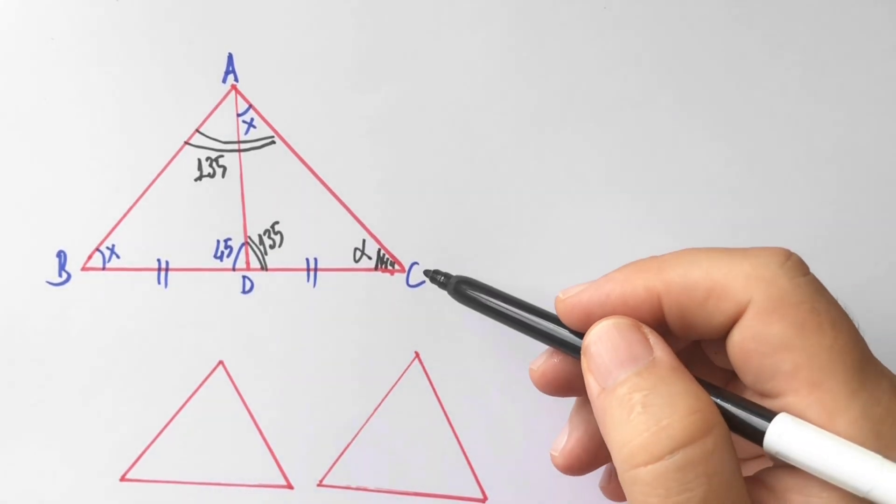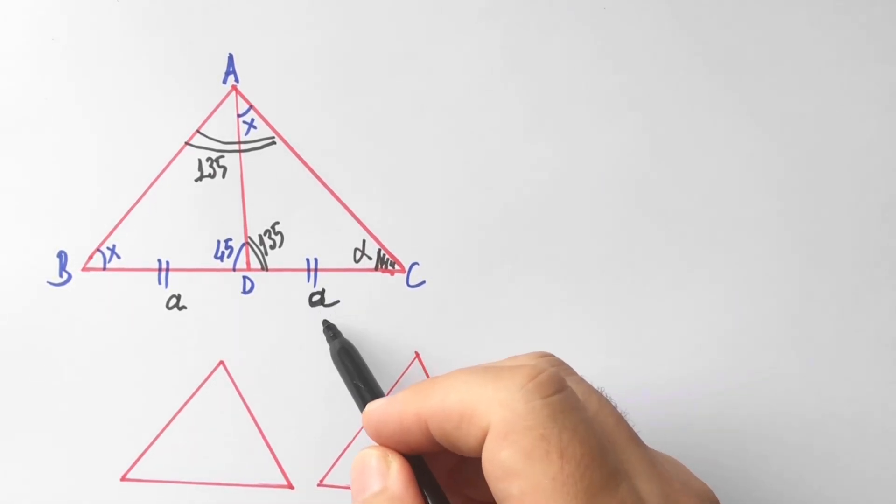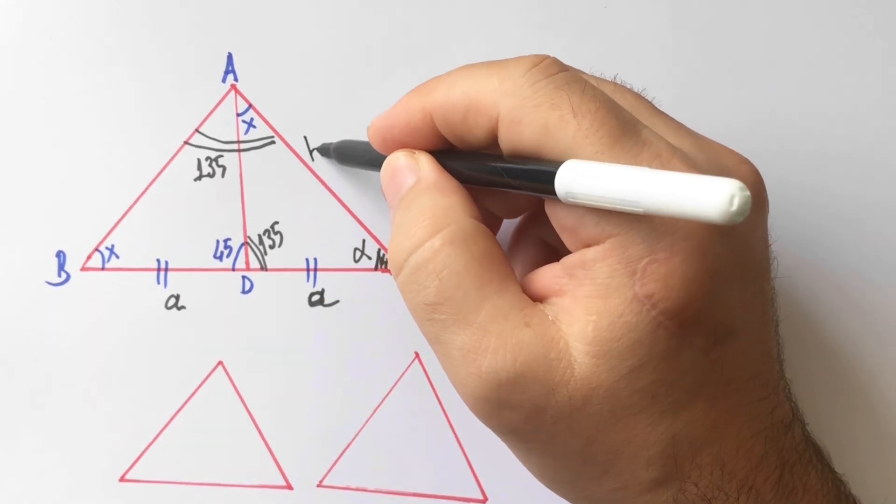So let's call these two equal parts A, and here let's call this B units.